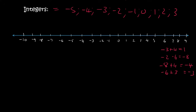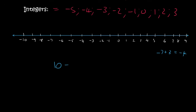For the next ones, why not try to pause the video and try them yourself. So here we're going to do minus 7 plus 3. You start at minus 7, and you add 3, and that will give you minus 4. Next, 10 minus 12. I don't have a 10 on the number line here, so 10 should be there, and if you minus 12, you have to go 12 places back, and so you'd end up at minus 2.